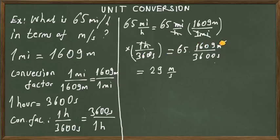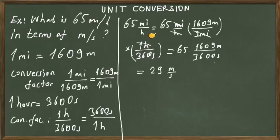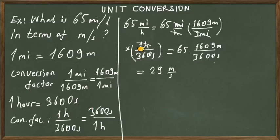Next, we multiply by the second conversion factor to convert hours to seconds. Since hour is in the denominator of the original measurement, we use one hour divided by 3600 seconds, placing hour in the numerator so it cancels with the hour in the denominator, leaving us with seconds.